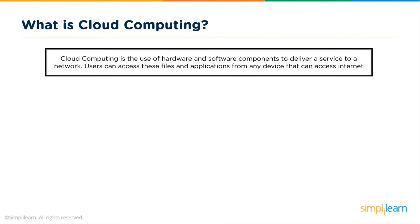Before we go into cloud computing, what does the term 'cloud' mean? Cloud refers to a network or internet — it provides services over public and private networks. Many applications execute on the cloud, and it is present at a very remote location, so users can access files and applications from any device as long as it has strong internet connectivity.